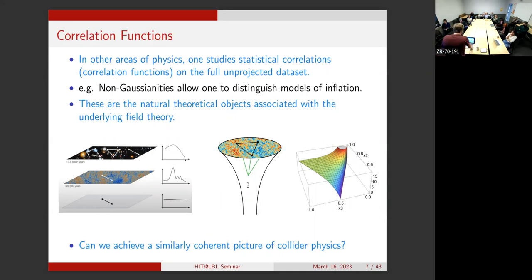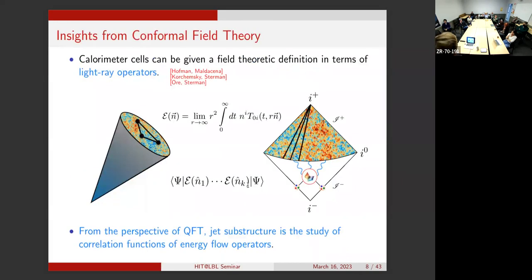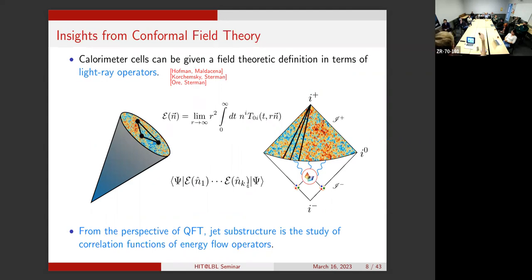What I would like is a similarly coherent picture of collider physics, where you measure correlation functions of the asymptotic energy flux to back out questions about underlying particles—beyond-the-standard-model particles, intrinsic mass scales like the top or bottom quark mass, and emergent scales like the confinement scale or scales in the quark-gluon plasma. The connection to formal field theory comes from an insight popularized by Hofman and Maldacena: in an idealized conformal field theory, one can write down a field-theory definition of what is a calorimeter cell.